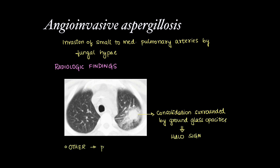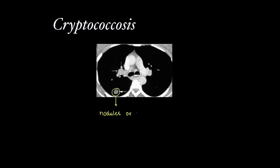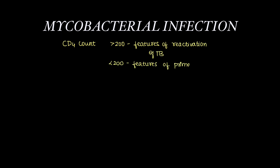Angio-invasive aspergillosis can also present with pulmonary infarcts. The next fungal infection is Cryptococcus, which can present as nodules or consolidation with hilar or mediastinal lymphadenopathy. Mycobacterial infection presents in different forms: when CD4 count is more than 200, it can present as reactivation of TB; when less than 200, it presents as features of primary TB.